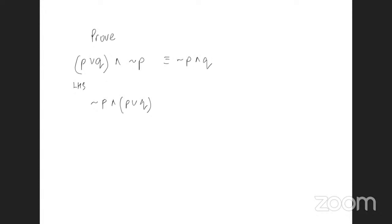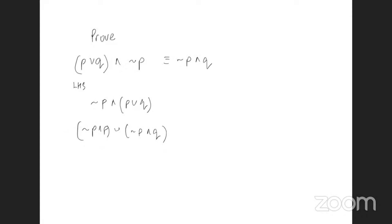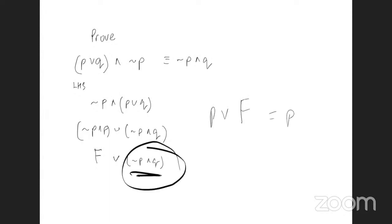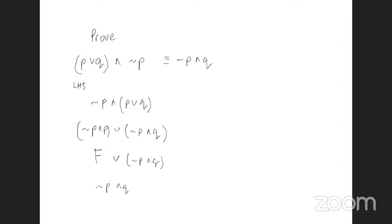Using the distributive law you get: (¬p ∧ p) or (¬p ∧ q). Now ¬p ∧ p is always false. And false or anything is anything — if you look at the rules, p or false is p. So this whole thing simplifies to ¬p ∧ q, and you're done.